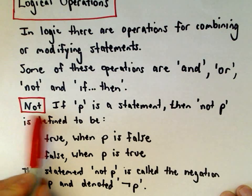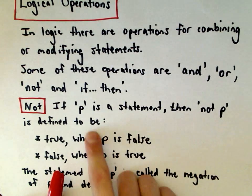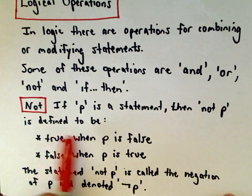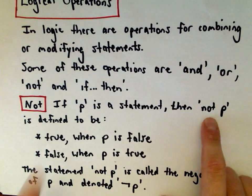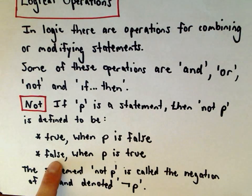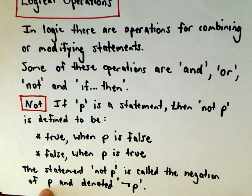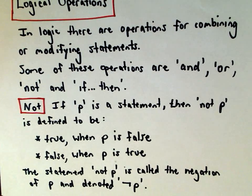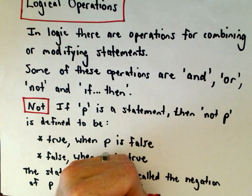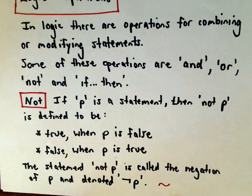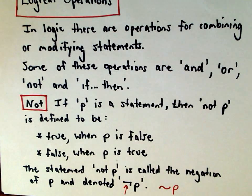Let's talk about not-statements first. If P is a statement, then not-P is defined to be true when the original statement P is false, and vice versa — not-P is false when P is true. The statement not-P is often called the negation of P. The notation I've seen includes a little bar with an arm, or a tilde. The one I'll use most is the bar notation.